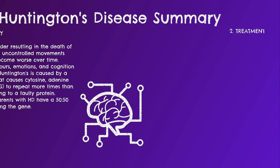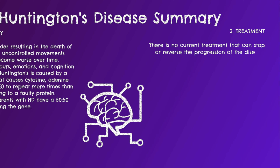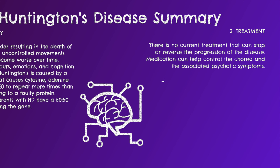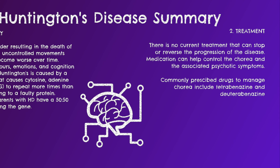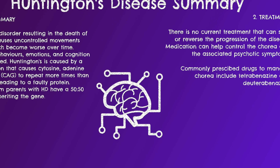Regarding treatment, there is no current treatment that can stop or reverse the progression of disease. Medication can help control chorea and the associated psychotic symptoms. Commonly prescribed drugs to manage chorea include tetrabenazine and deutetrabenazine.